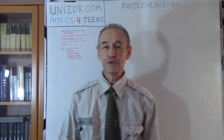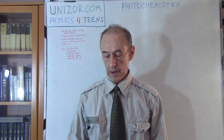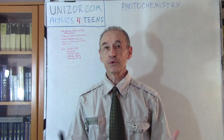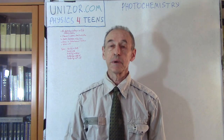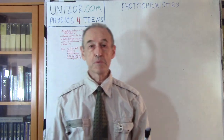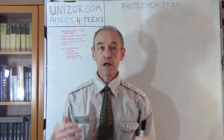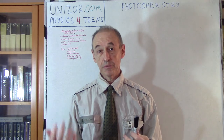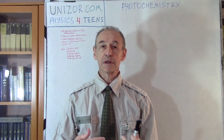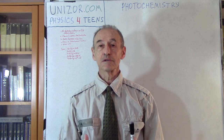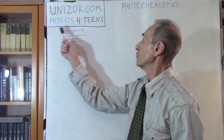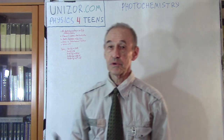Hi, I'm Zor. Welcome to Induzor Education. This lecture continues my series of lectures about light. In this particular case we are talking about photochemistry, which is basically a combination of light, electromagnetic oscillations, and chemistry, and how electromagnetic oscillations can affect the chemistry. This lecture is part of the course called Physics for Teens presented on Induzor.com.